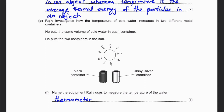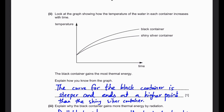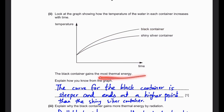Rajiv investigates how the temperature of cold water increases in two different metal containers. He puts the same volume of cold water in each and places them in the sun. Name the equipment used to measure the temperature - a thermometer. Looking at the graph showing temperature increase over time, the black container gains the most thermal energy compared to the shiny silver container. The curve for the black container is steeper and ends at a higher point, even though both start at the same temperature.